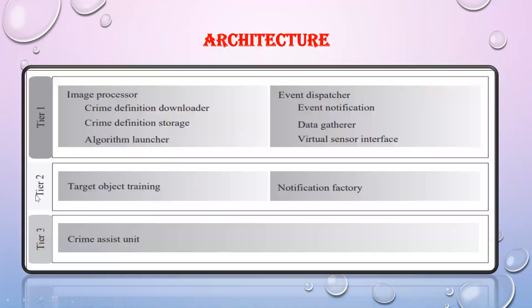This architecture is divided into three tiers. Tier one is divided into two batches: image processor and event dispatcher. The image processor handles crime definition downloader, crime definition storage, and algorithm launcher. The event dispatcher manages data gathered when an event is triggered. Tier two deals with training an object and notifying the relevant person once the trained dataset is derived. Tier three consists of a unit called Crime Assist, where all reports are stored and retrieved when a crime activity occurs.